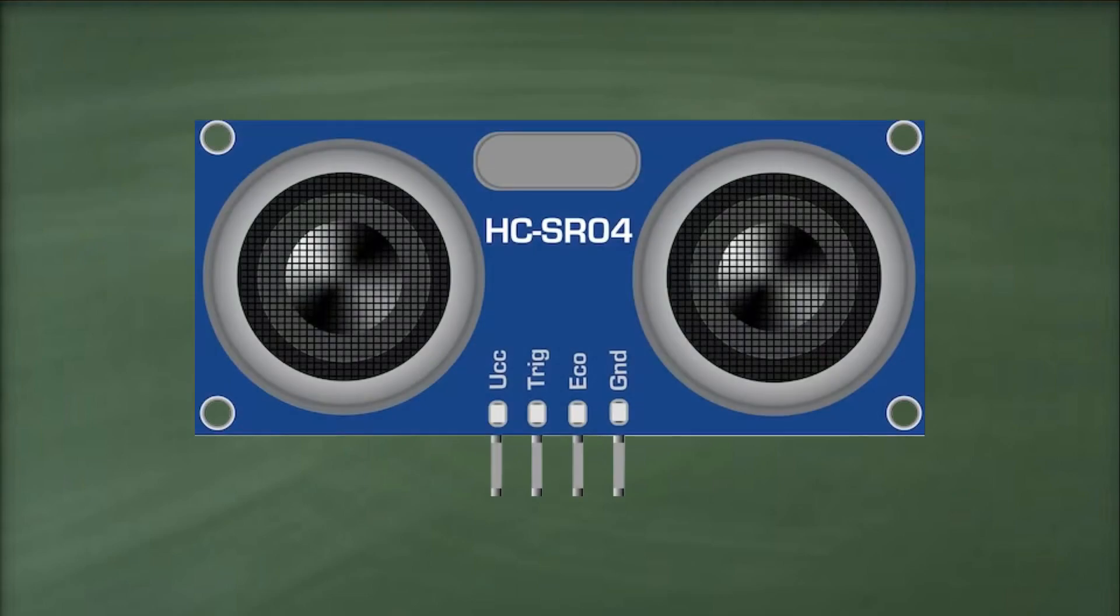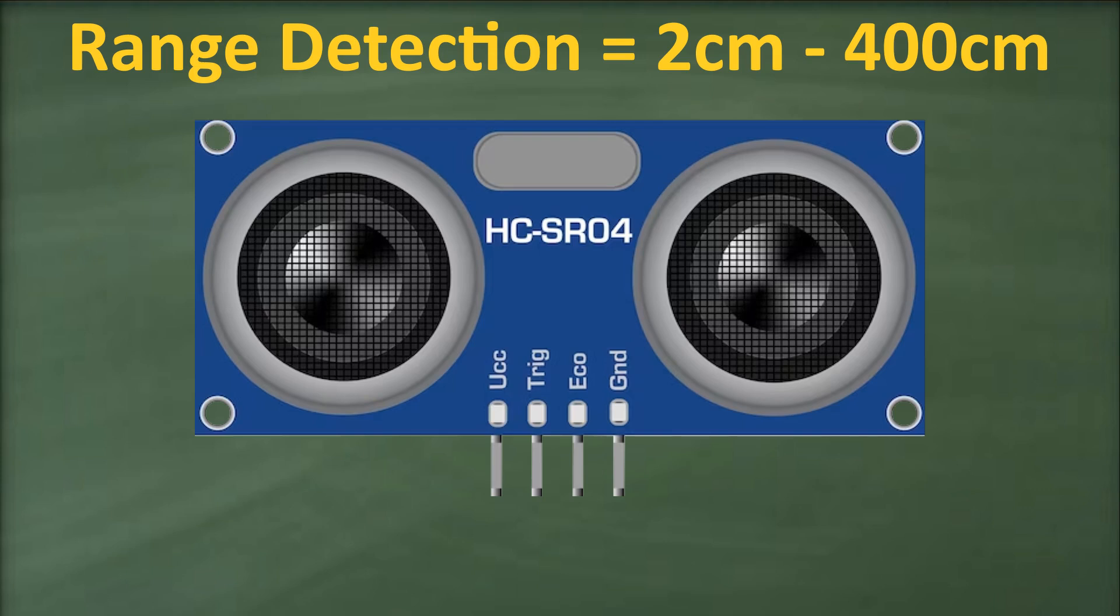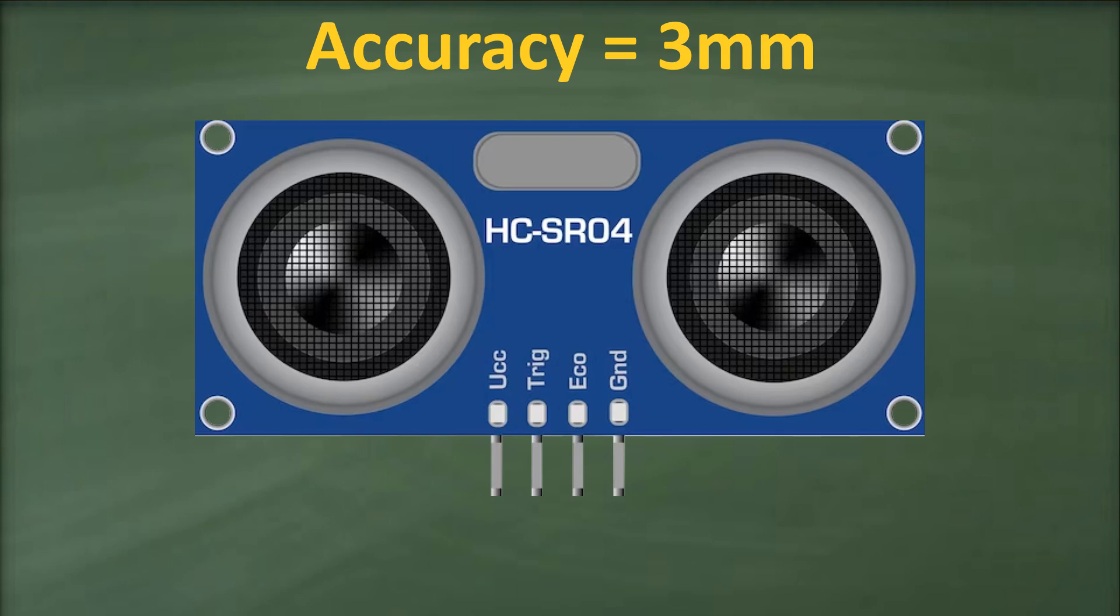Here is what our sensor looks like. The HC-SR04 provides excellent non-contact range detection between 2 centimeters to 400 centimeters, approximately 13 feet, with an accuracy of 3 millimeters.